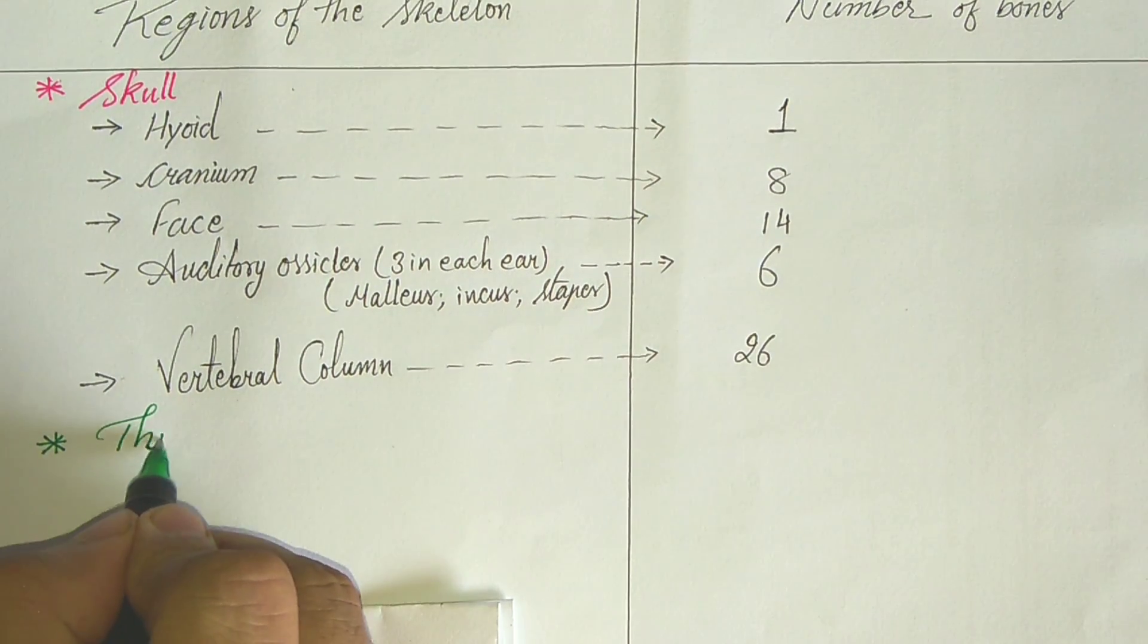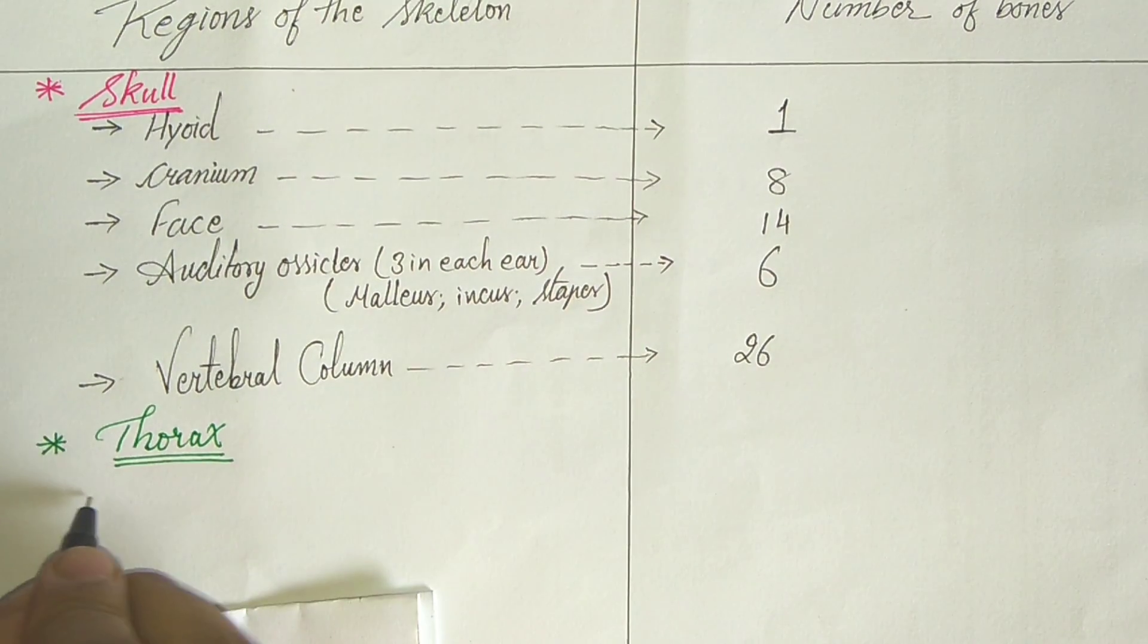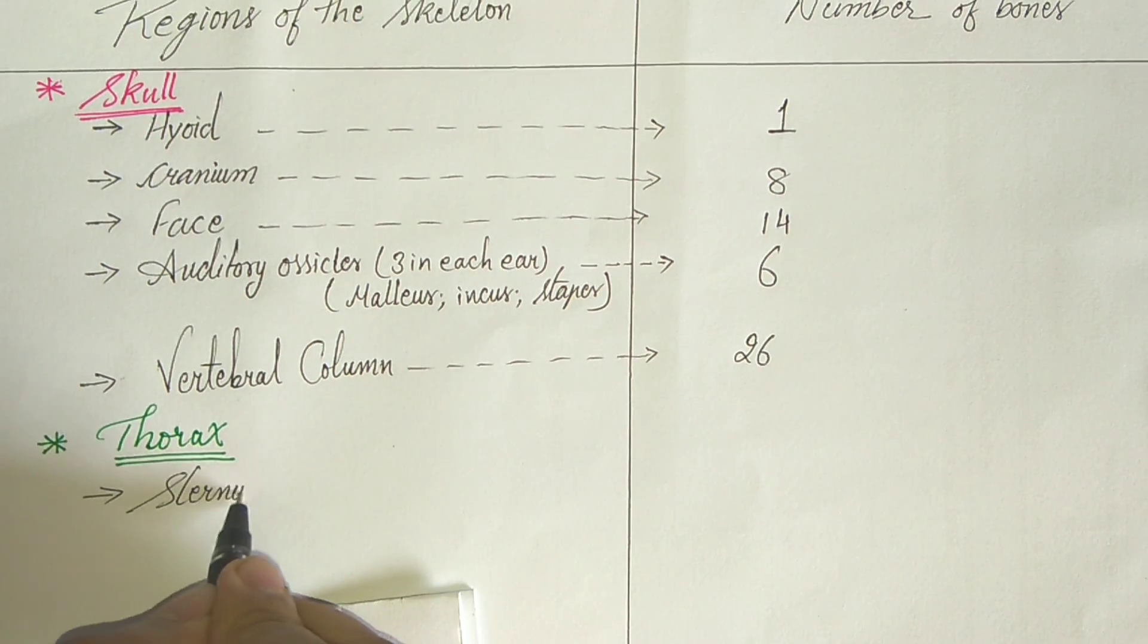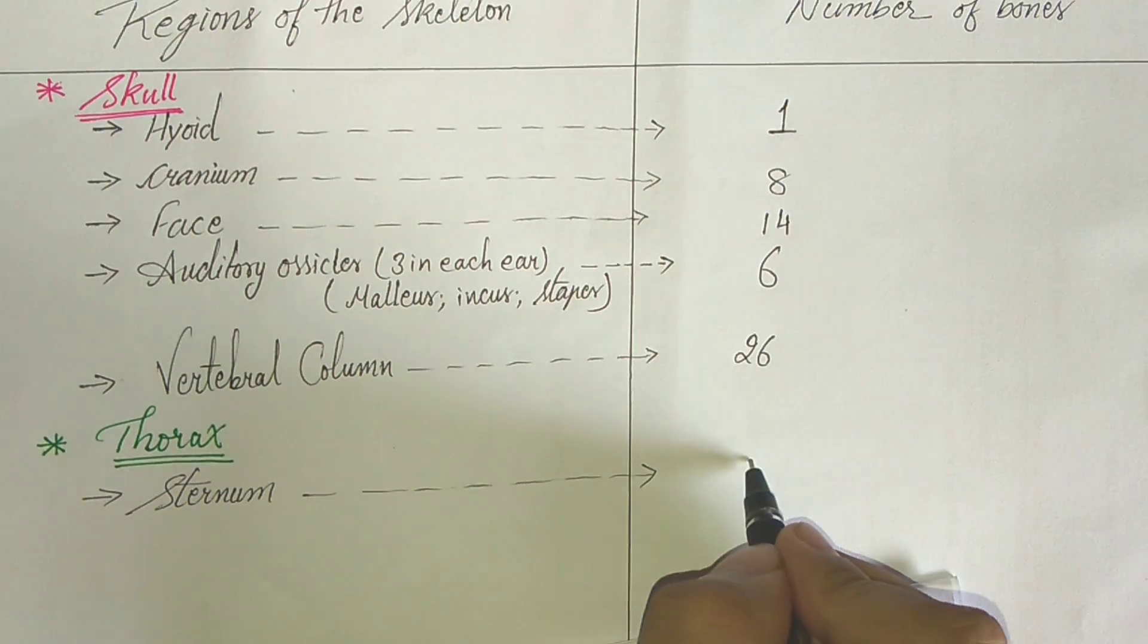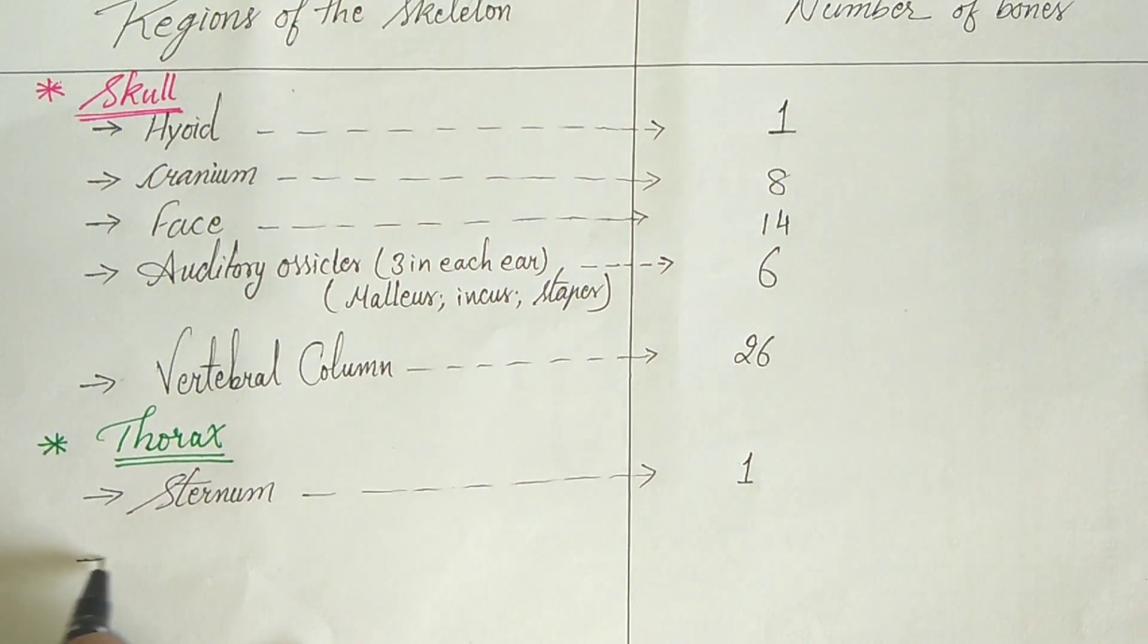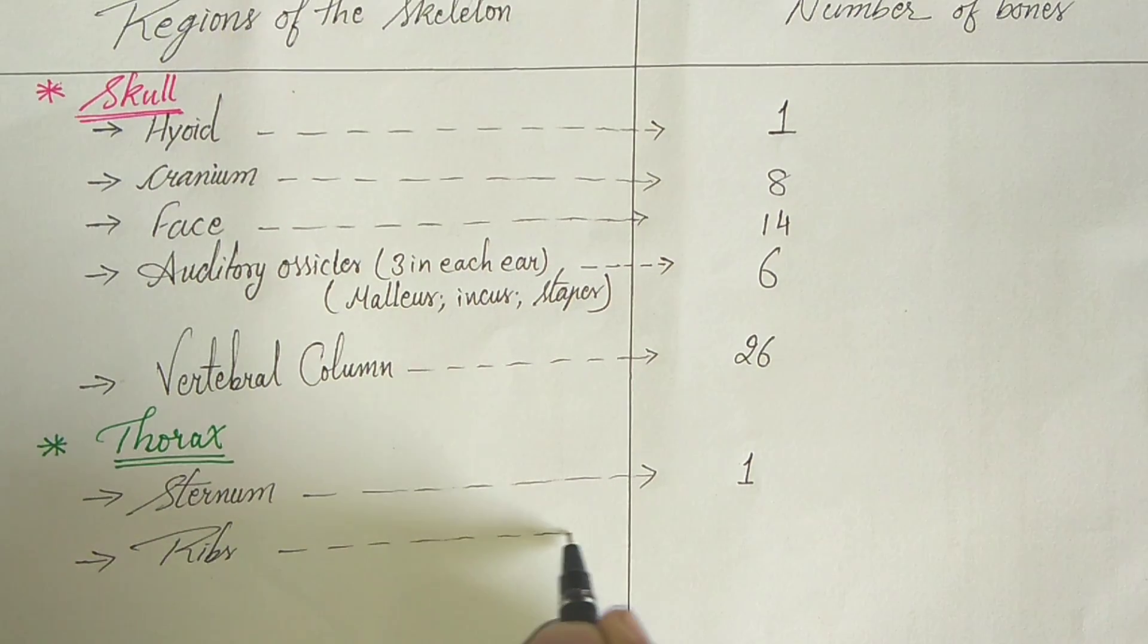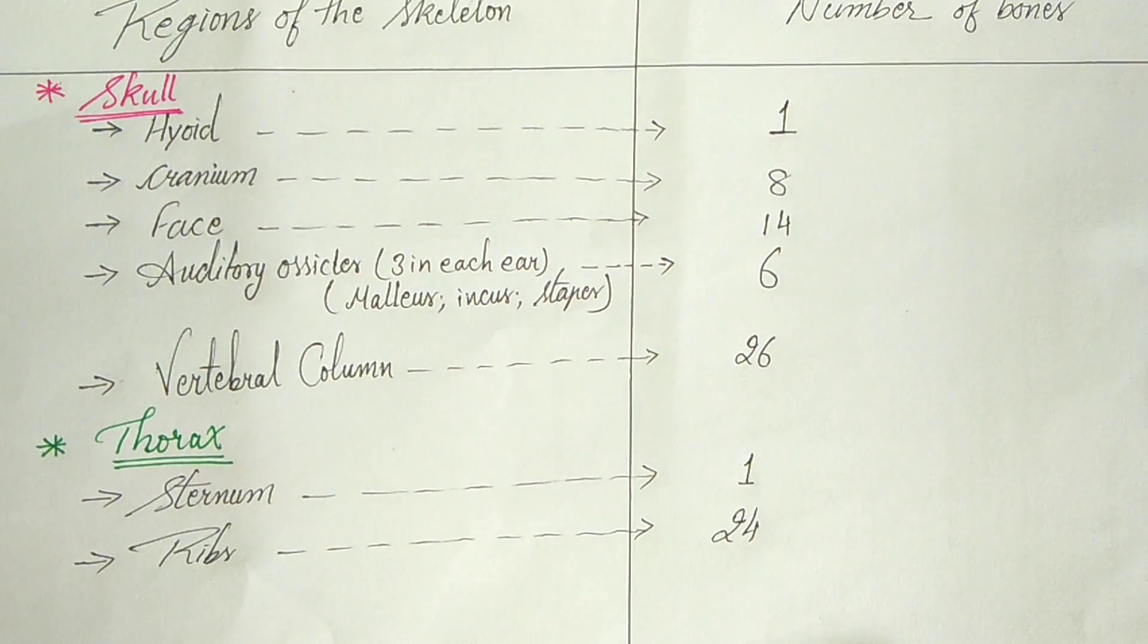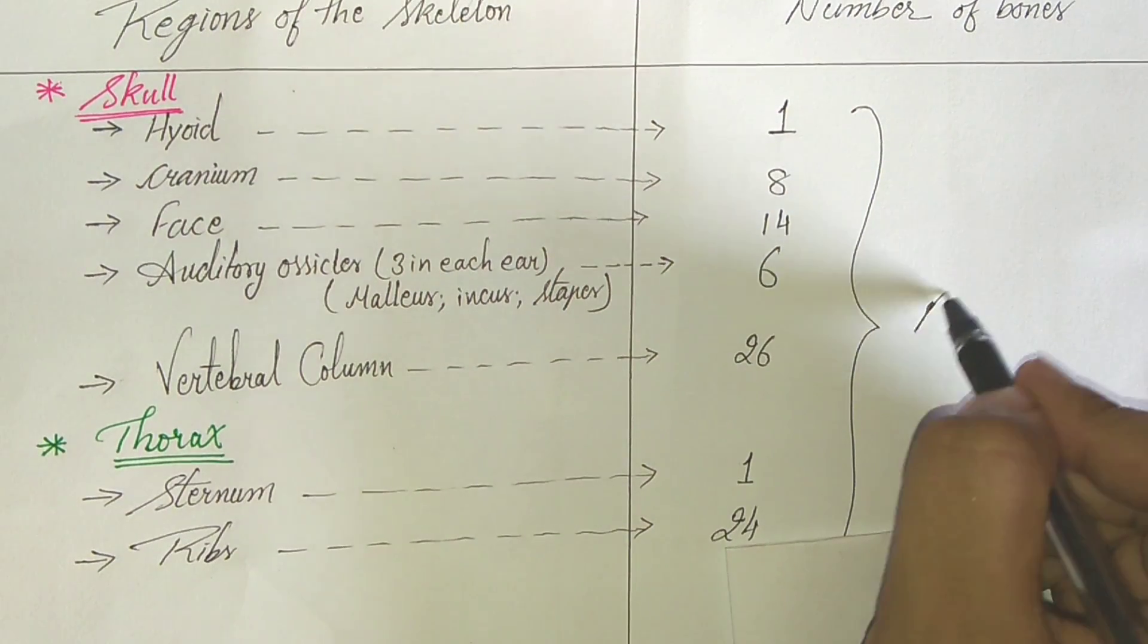Now come to the thorax region. In thorax region of a skeleton, one sternum, only one sternum is present. And ribs, 24 ribs. These are the best example for flat bone.